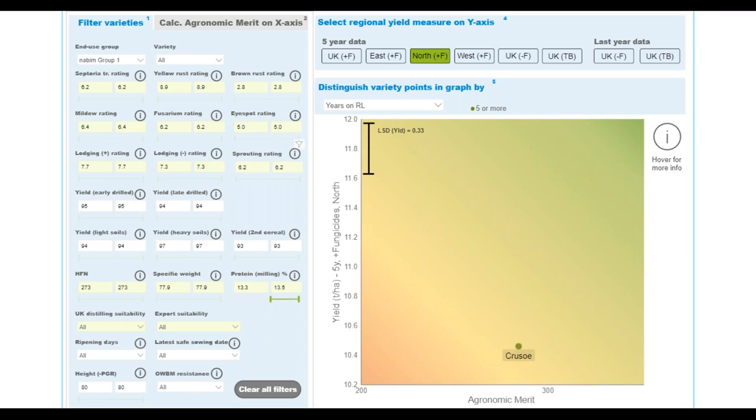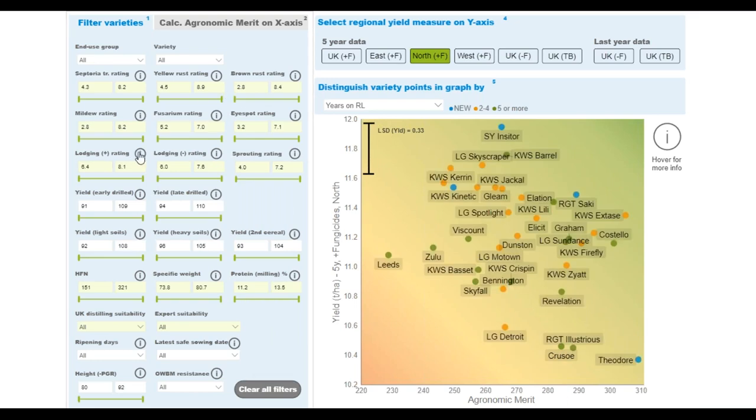If, for example, I'm just interested in group one wheats, I select from the end-use group, I select group ones. Now I've got four varieties left. Given that I'm interested in group ones, the logical next step would be to say, I want to have a variety that has a high protein spec. I would move this slider to say 13.3 and all of a sudden, that means that Crusoe is the realistic variety left. That's in some scenarios how quickly you can narrow down your 35 varieties to a subsection.